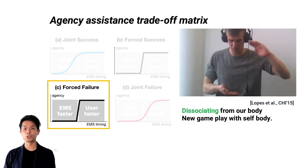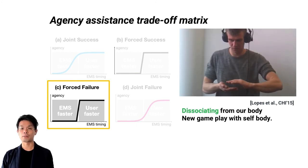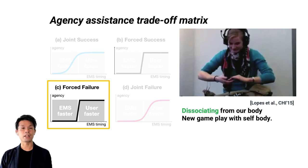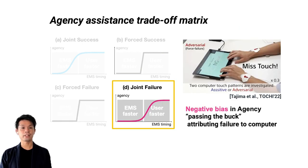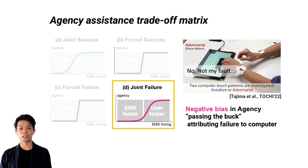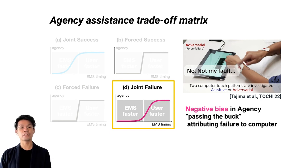The force failure is a situation that is not beneficial. However, we can also leverage this dissociating the action from our body. For instance, we can even play a game with other agents inside our body. Joint failure, where the user and computer touch in correct action, could be also an interesting design. As we mentioned, negative bias. A user would have less agency in the failure task. This might be beneficial for keeping motivation and self-efficacy in human-computer integration system.